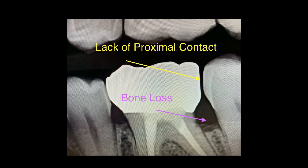This clip shows both a pathology and its cause. Looking at the bone loss on the right, pointed by the purple arrow, you can see a saucer-shaped cavity formed beneath the contact point. You can also identify the cause: there is no proximal contact at all, leading to food impaction in the interproximal area and resulting in bone loss.